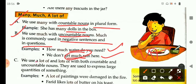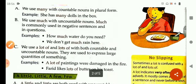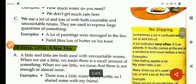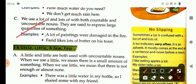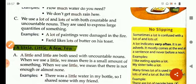We use a lot of and lots of with both countable and uncountable nouns. They are used to express large quantities of something. Let's see an example. A lot of paintings were damaged in the fire. It tells about a large quantity of paintings. Farid likes a lot of butter on his toast, also denoting large quantity of butter.